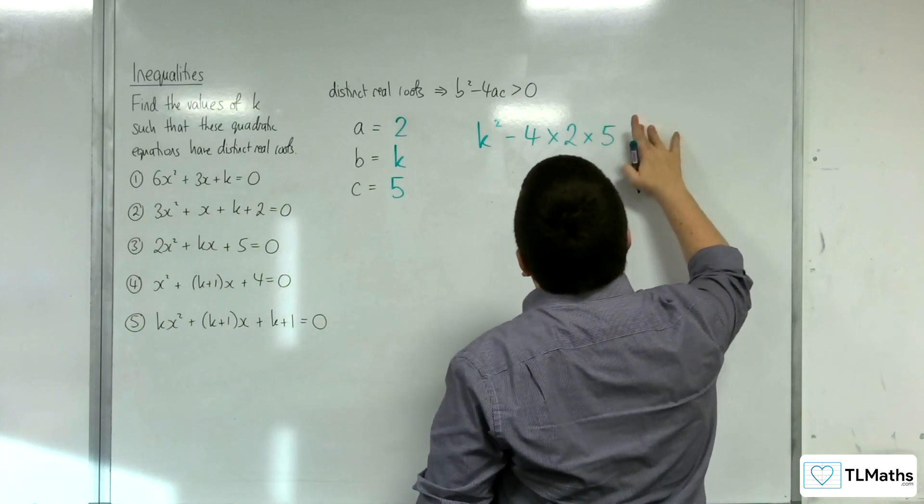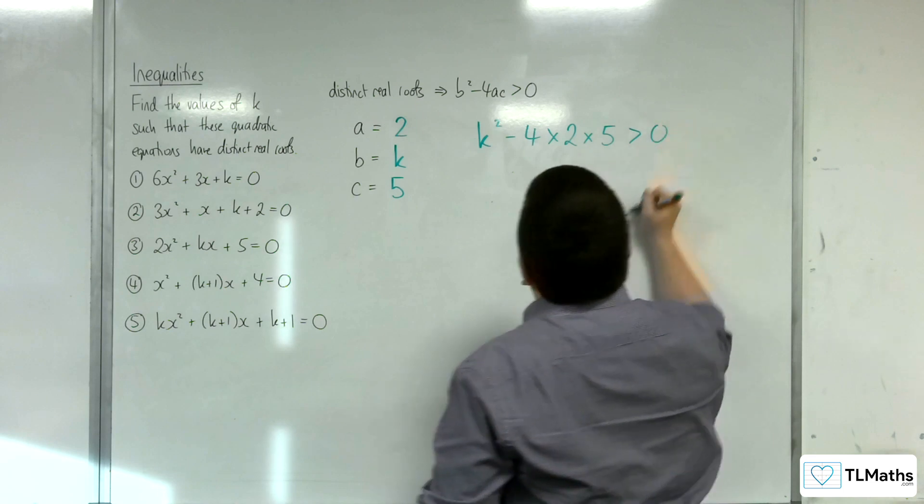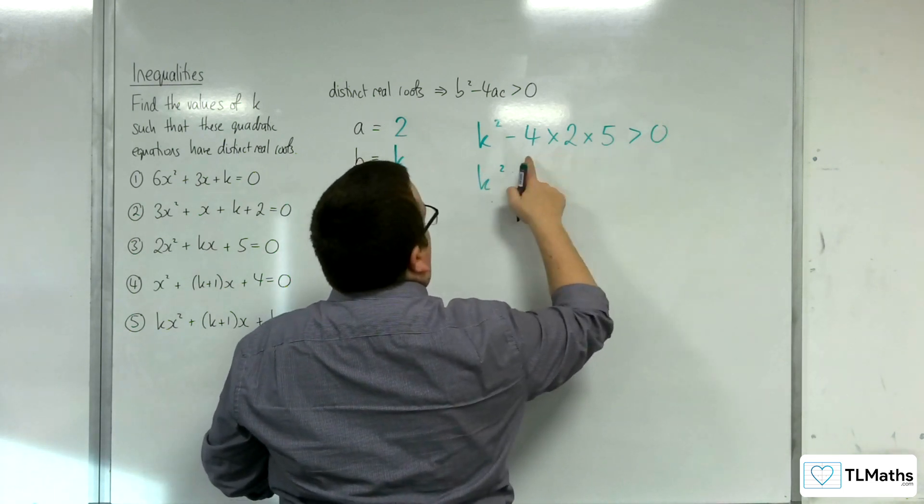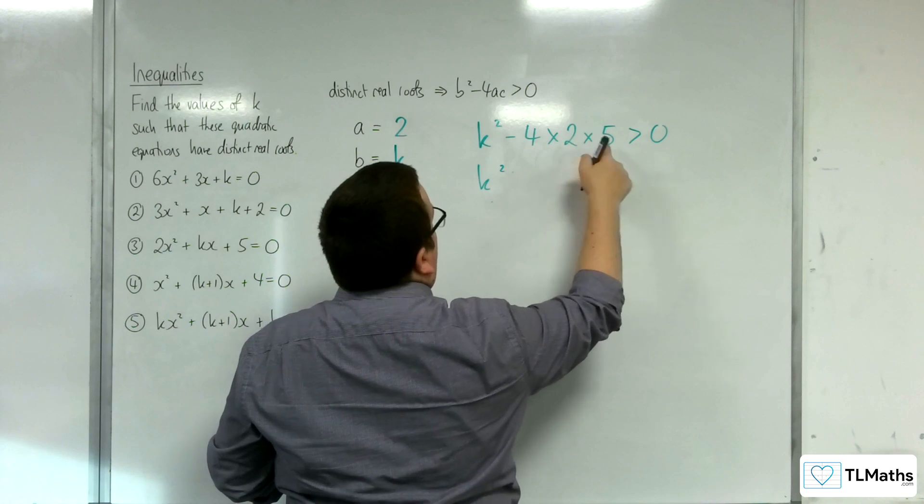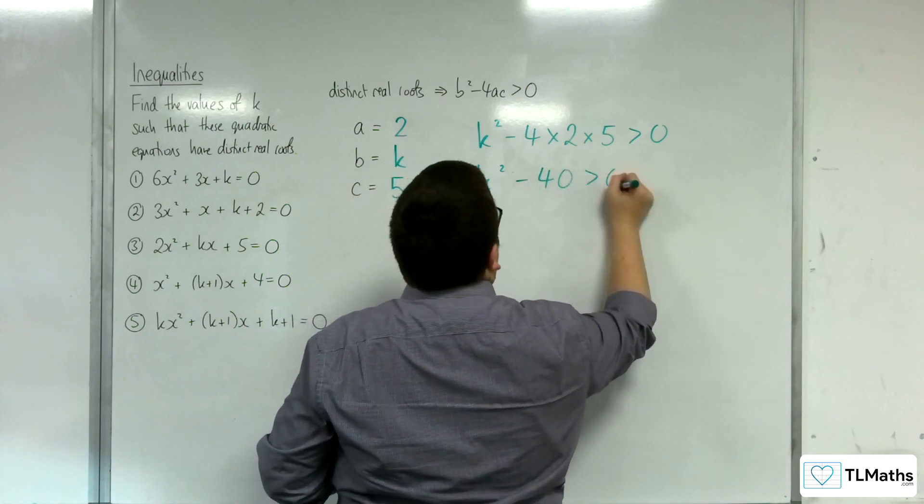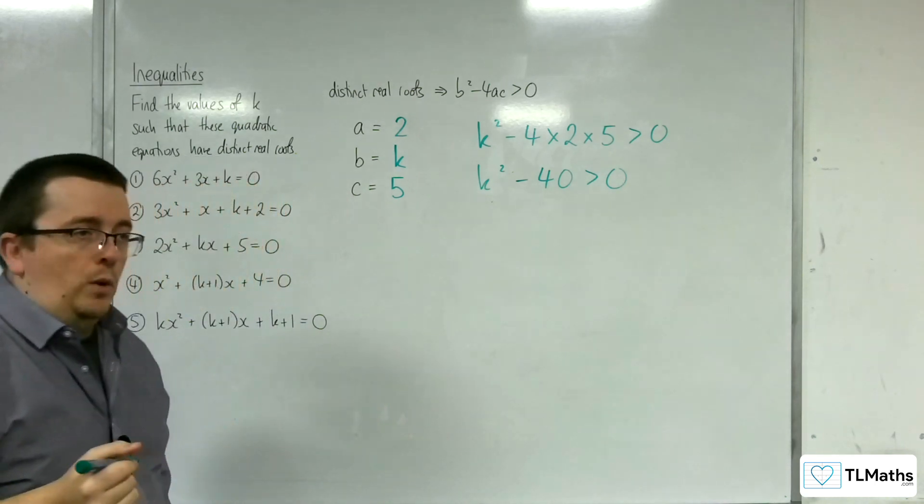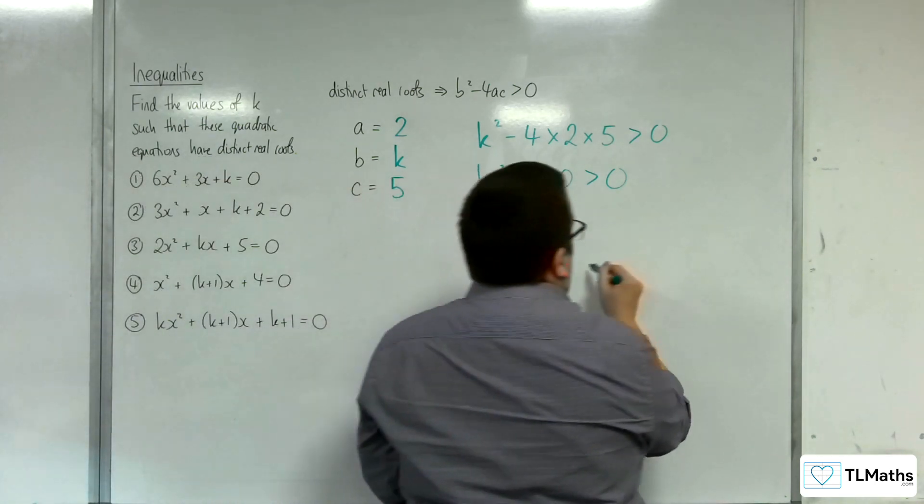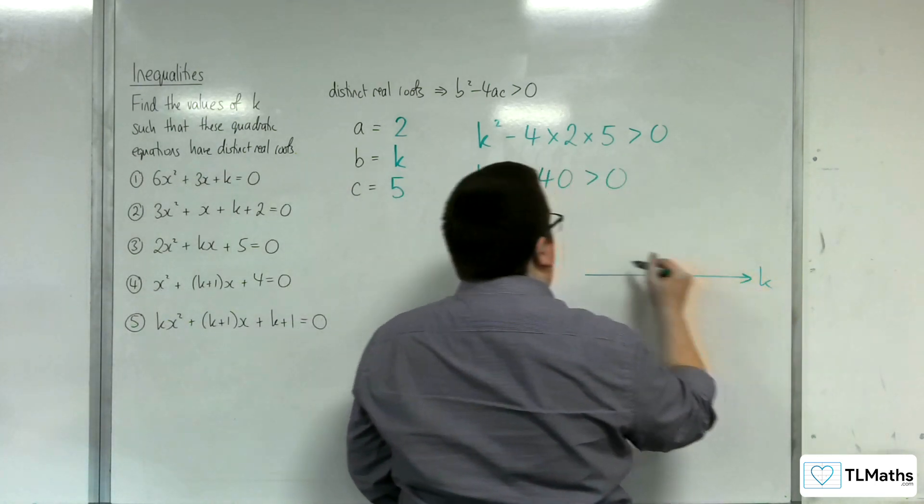This time we have k squared, take away 4 lots of a times c, that is greater than 0. So, k squared, we have 4 times 2 is 8, times 5 is 40. So, we need to solve this inequality here. Here is your k-axis.